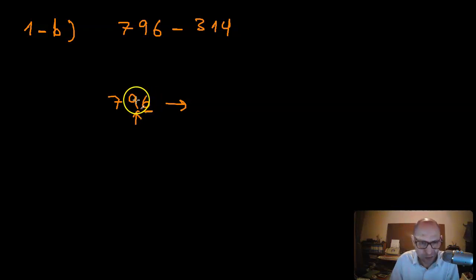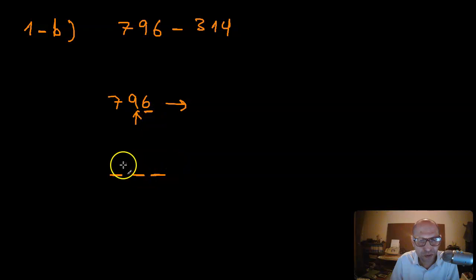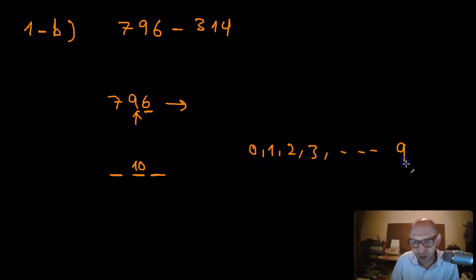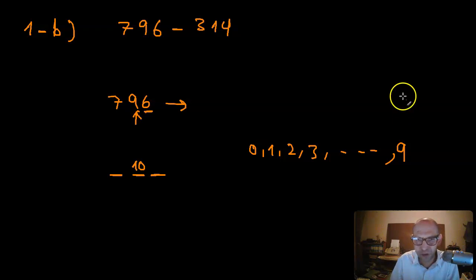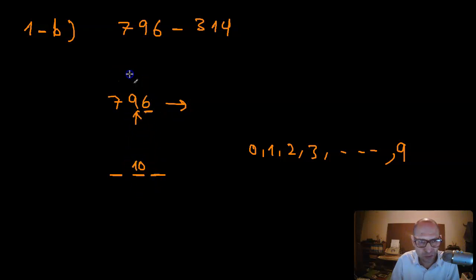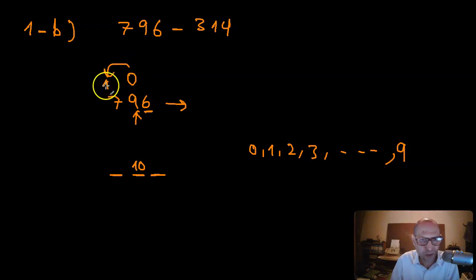When rounding up and the digit is a 9, the 9 becomes a 10. Since you can only put one digit (0 through 9) in one place value, the 0 stays and the 1 is carried over to the next place value. So 1 plus 7 becomes 8, giving us 800.